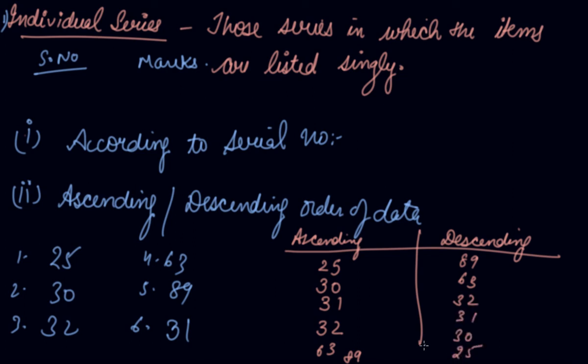25. So ascending or descending order of data - this is your individual series. I hope you have completely understood about data and individual series. Download the Scholars Learning app and enjoy the learning experience with us.